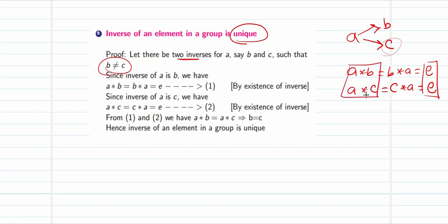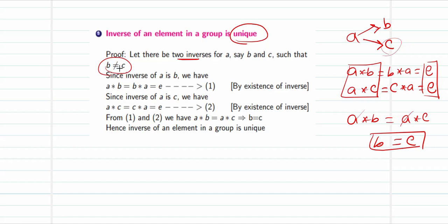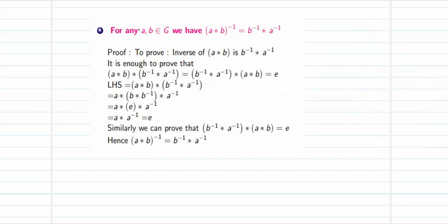Since both expressions equal e, we have a★b = a★c. By the cancellation law, we can cancel a from the left, giving b = c. But we assumed b ≠ c — a contradiction. This arose from assuming two inverses exist, so the inverse of an element in a group is always unique.